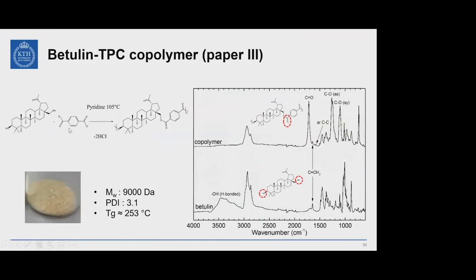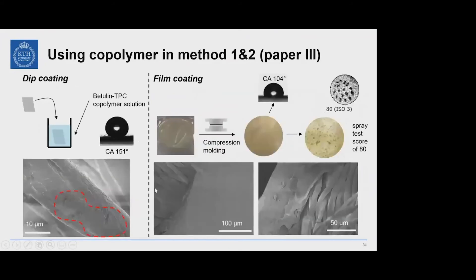We also prepared a betulin-based co-polymer with terephthaloyl chloride. The success of the reaction was verified by the absence of the hydroxyl group and the presence of the carbonyl group in FTIR. We characterized it with GPC and DSC. Using the co-polymer instead of betulin monomers in both the dip coating and film coating methods, the film morphology appeared as thin slices covering the textile surface, with a contact angle of around 100–104° and a standard water spray test score of 80.